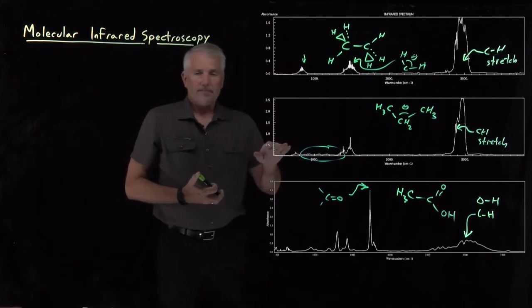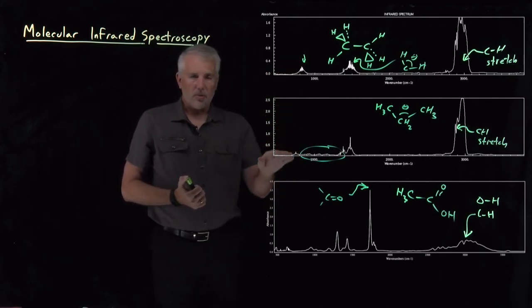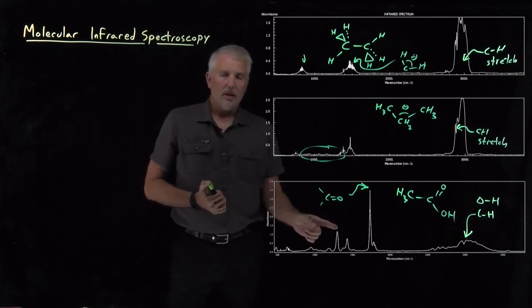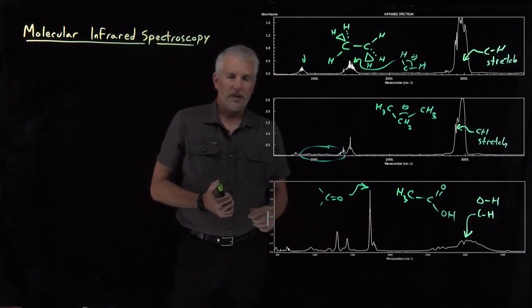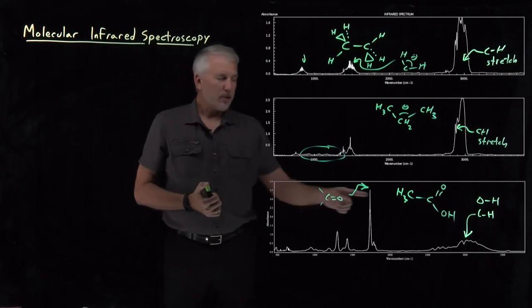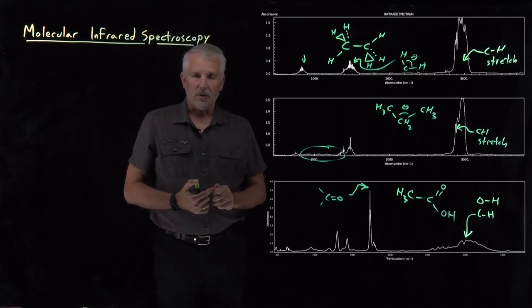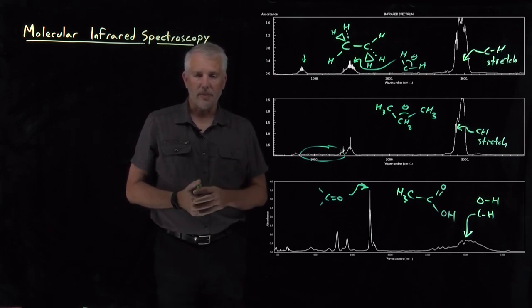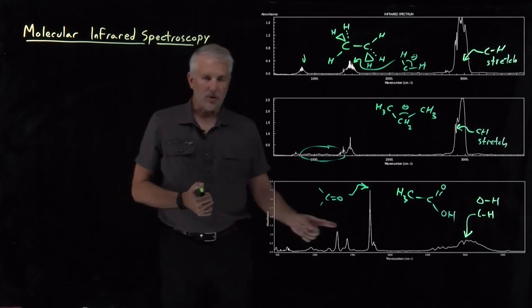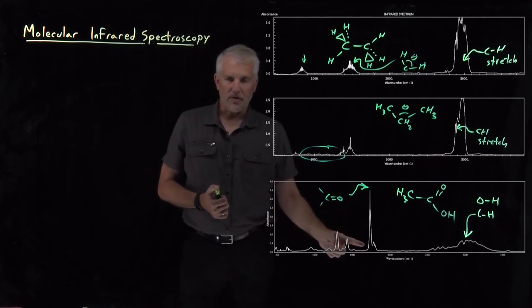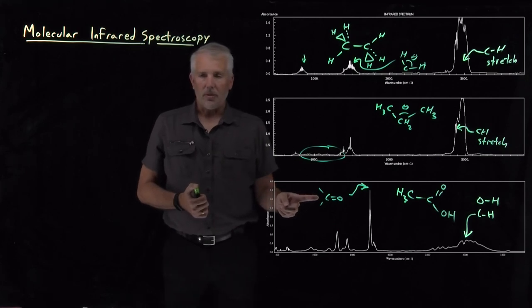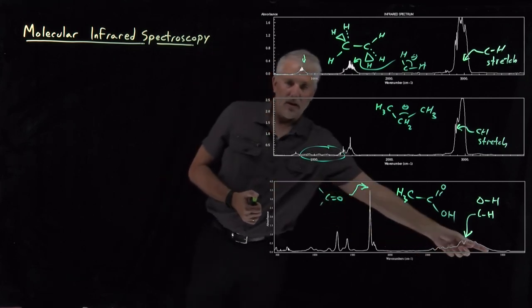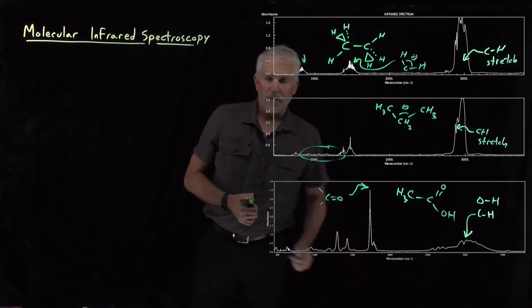As a summary, as molecules get larger, more complicated, more functional groups, you should expect to see more different types of peaks in the infrared spectrum corresponding to those functional groups. In fact, that's what infrared spectroscopy is often used for, is a sort of fingerprint or diagnostic technique. If you take the infrared spectrum of a molecule and you observe that it's got a sharp peak near 1700, you know that molecule probably has a carbonyl group in it.